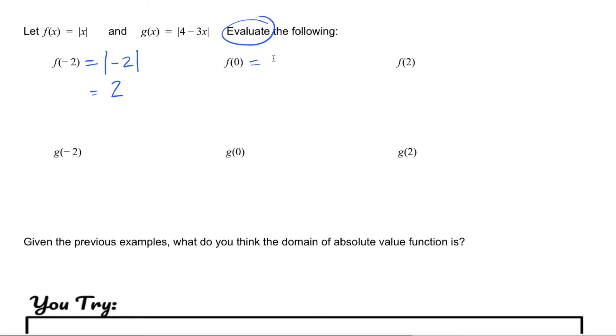If our input is zero, if x is zero, then I'm going to plug in zero, substitute in zero when I see x, and the absolute value of zero is just zero. And the last one, the absolute value of two is positive two.